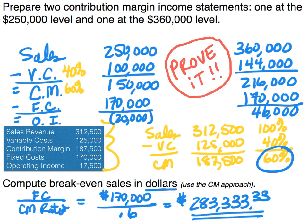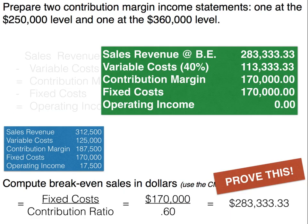Now use the income statement approach to prove it. Create an income statement at $283,333.33: sales of $283,333.33, variable costs at 40% equal $113,333.33, contribution margin is $170,000, fixed costs are $170,000, giving an operating income of zero. This proves the break-even in sales dollars is $283,333.33.